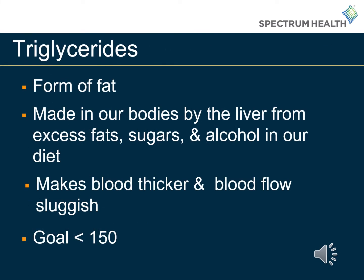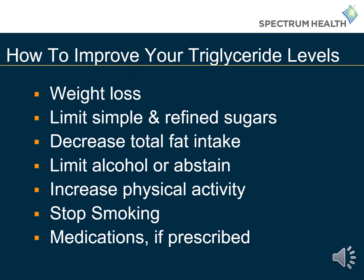If you have had a lipid panel drawn, the panel will show all of your cholesterol levels as well as your triglycerides. Triglycerides are a form of fat made in our bodies by the liver from excess fats, sugars, and alcohol in the diet. Triglycerides make the blood flow thicker and more sluggish, and our goal for triglycerides is less than 150. Physical activity and weight loss can help to improve triglyceride levels. A heart-healthy diet that limits simple and refined sugars and decreases total fat intake can also help. Try to limit or abstain from alcohol completely. Increased physical activity, tobacco cessation, and medications if prescribed can also help with triglycerides, as well as many of our other risk factors.